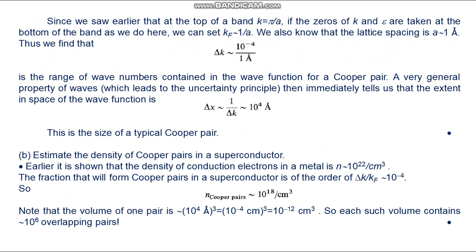The top of the band corresponds to k equals π divided by a. Taking k_f proportional 1 divided by a and the lattice spacing a equals 1 Angstrom, we find Δk proportional 10 to the minus 4 divided by one Angstrom. This is the range of wave numbers in the Cooper pair wave function. By the uncertainty principle, the spatial extent of the wave function is Δx proportional 10 to the 4 Angstroms. This is the size of the typical Cooper pair.